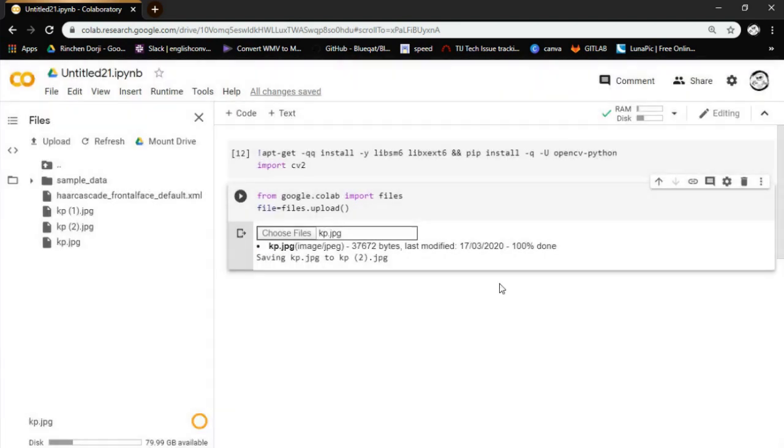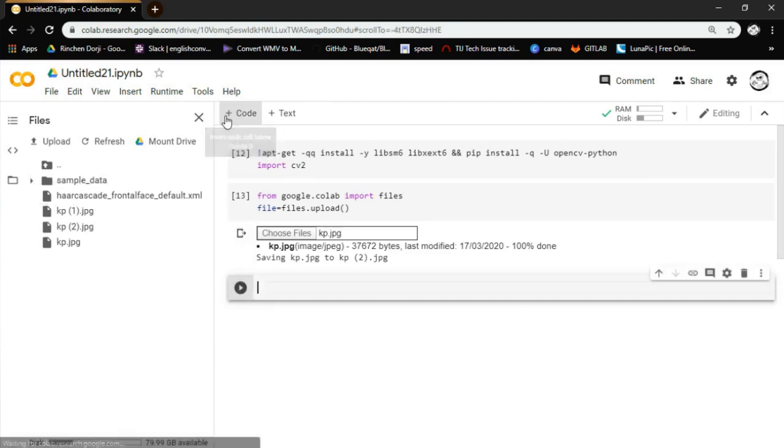I have already uploaded haarcascade_frontal_face_default.xml and I am showing how to upload by uploading an image, so that you can upload on your own.